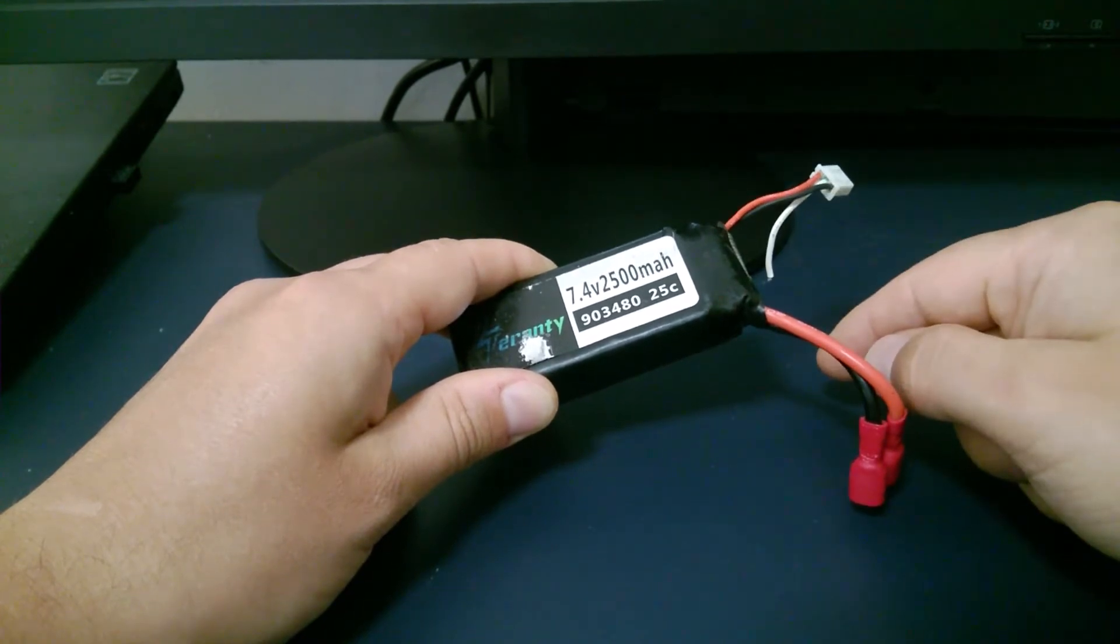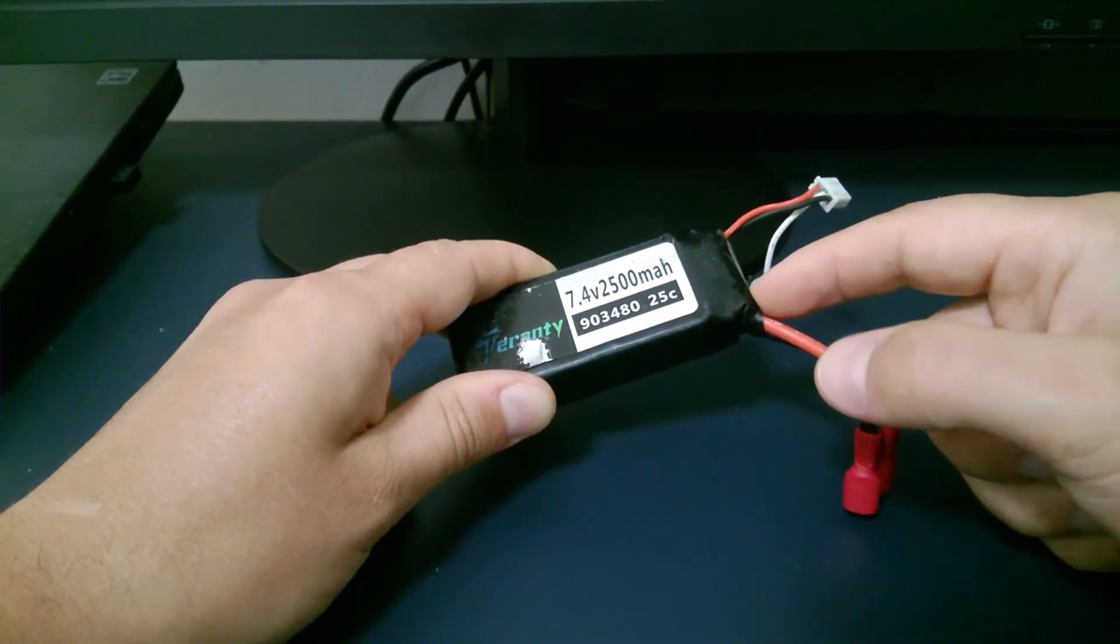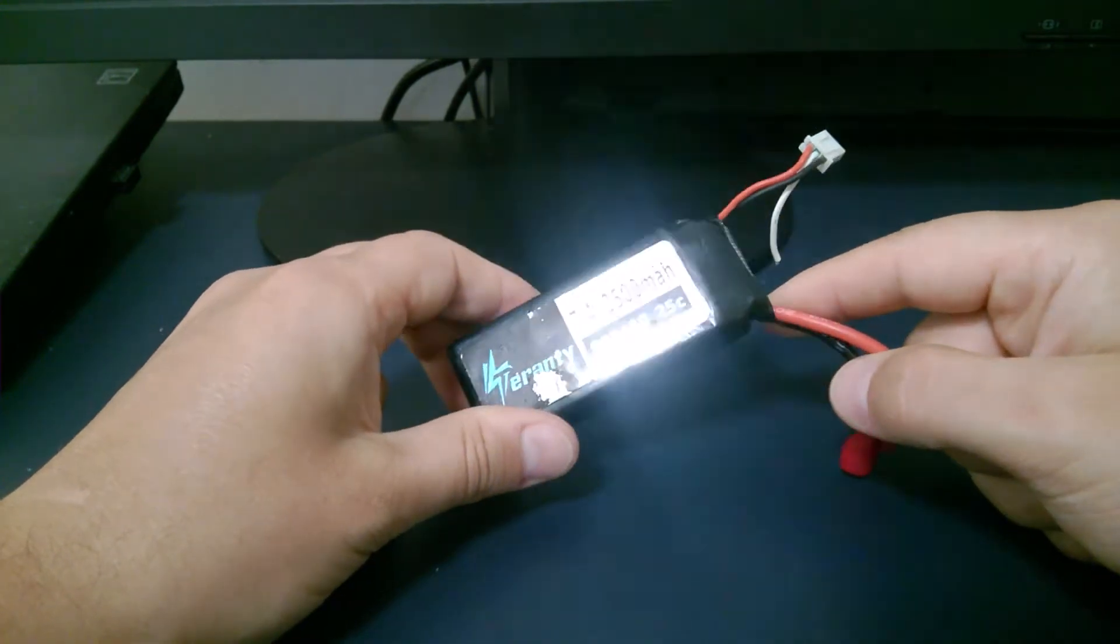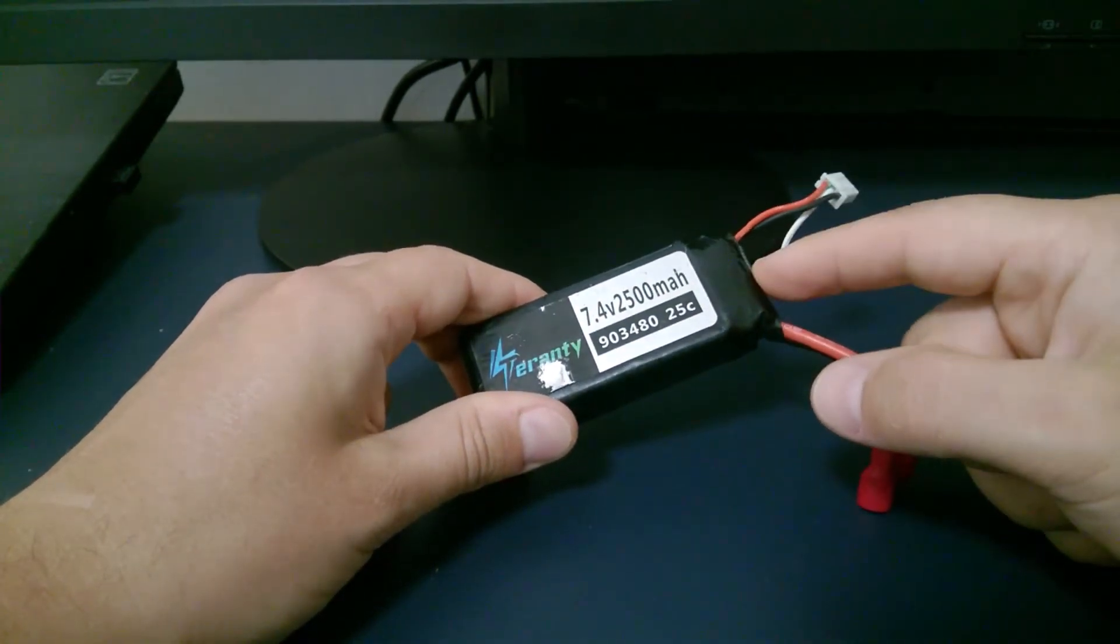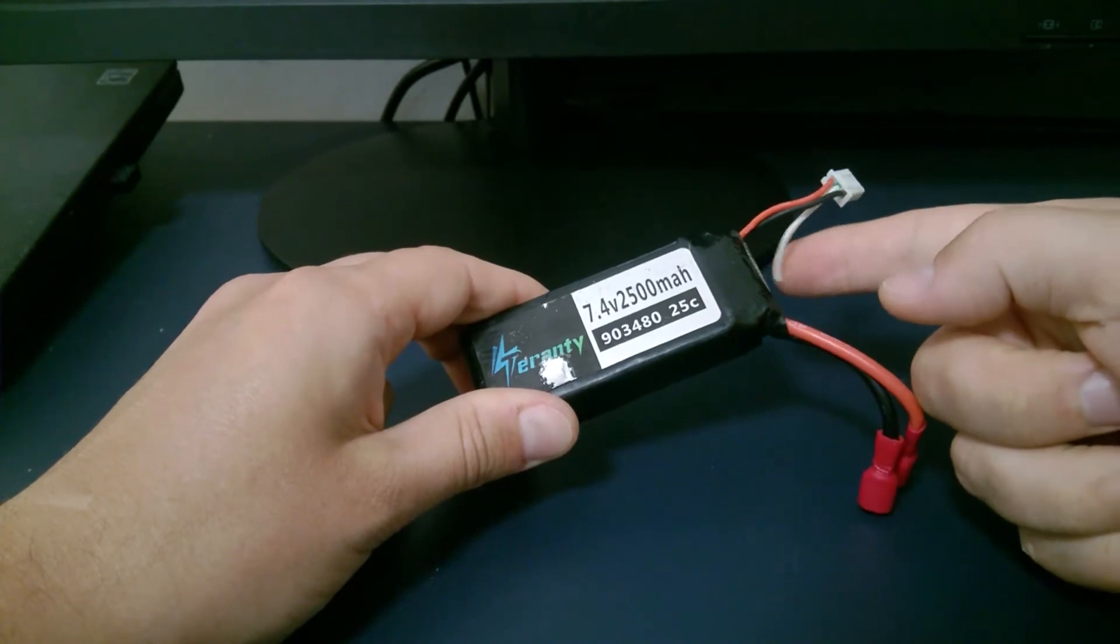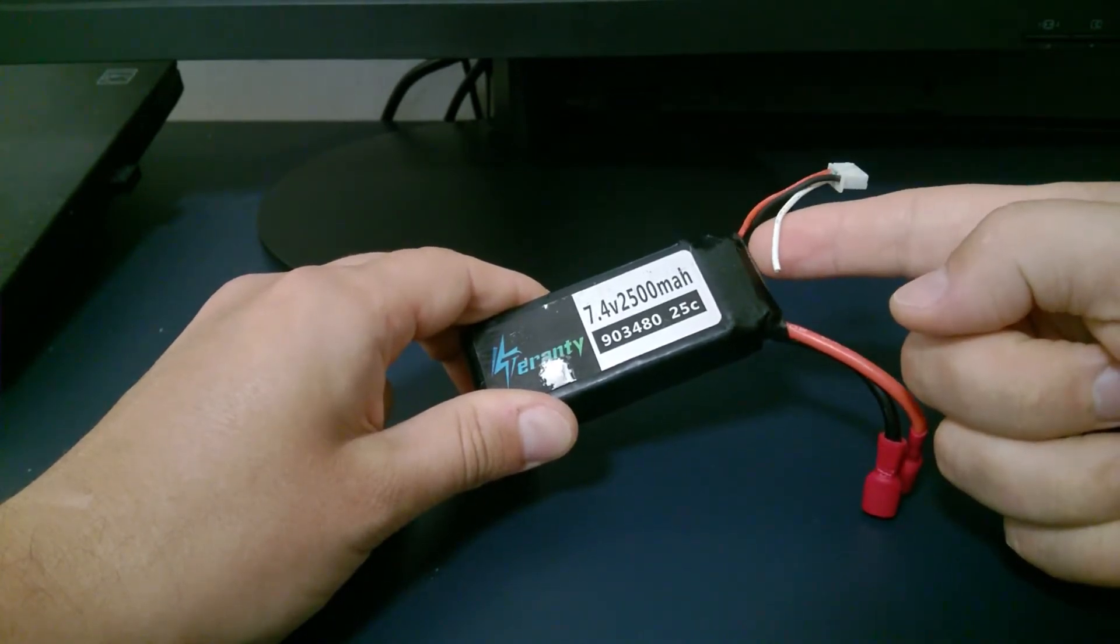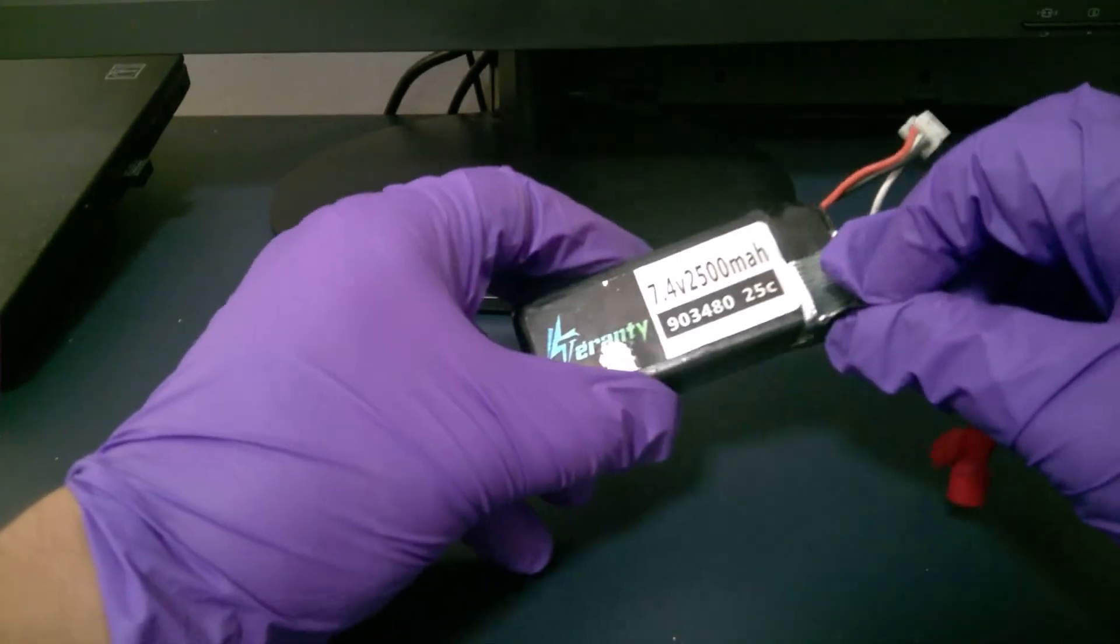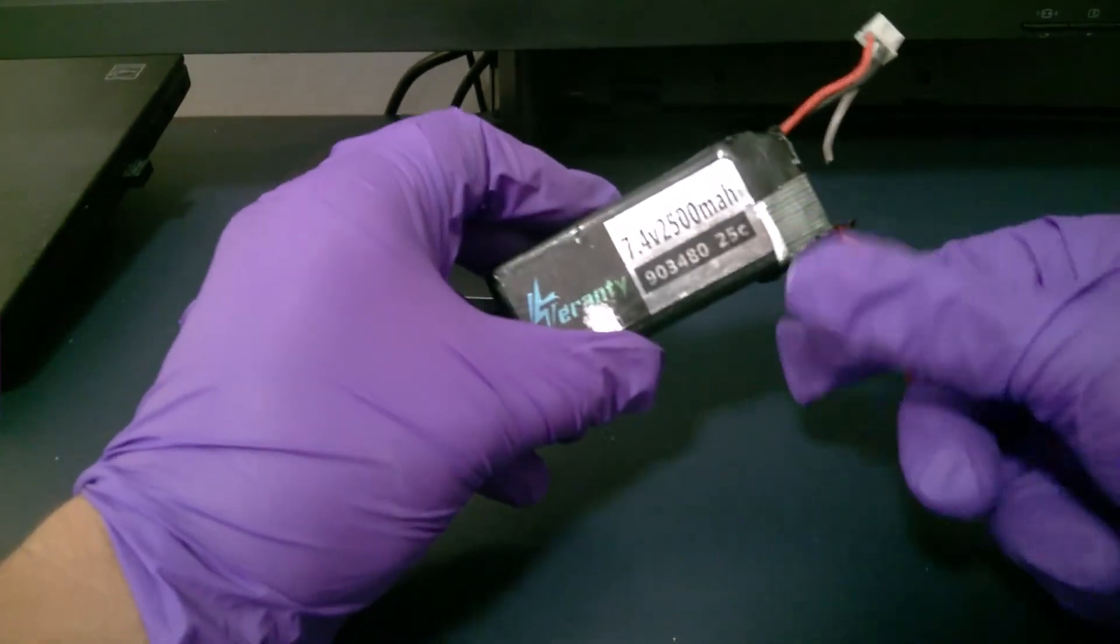Let's see how we're going to do that. I will open the protective casing of the battery and see what's inside and how I can solder this cable back. We start by peeling off the protective cover.